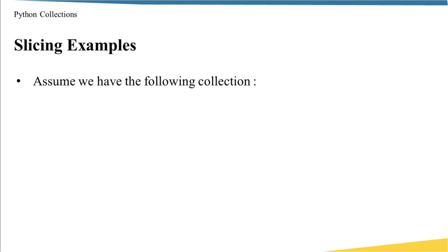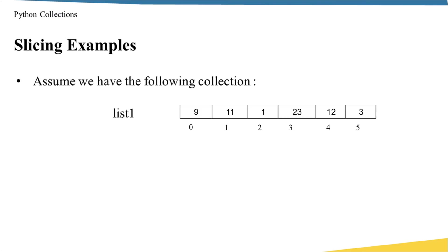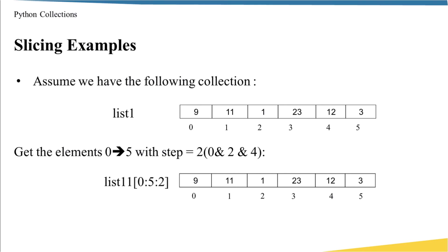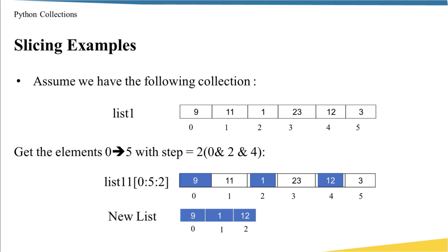The last example about slicing: I have a collection and I'm using positive indexing. Let's say I want elements from 0 to 5 but I want to move by a step of two. I say list_one[0:5:2], which means from beginning to the end with a step of two. In this case I extract every other element — 9, 1, 12 — giving me a new list with those elements, moving two steps at a time.